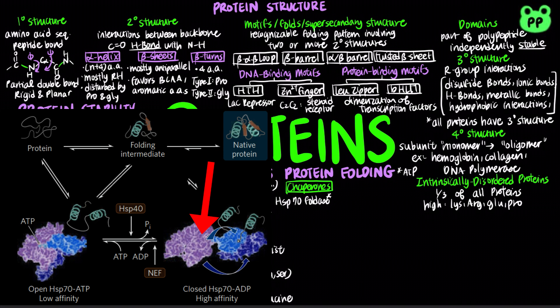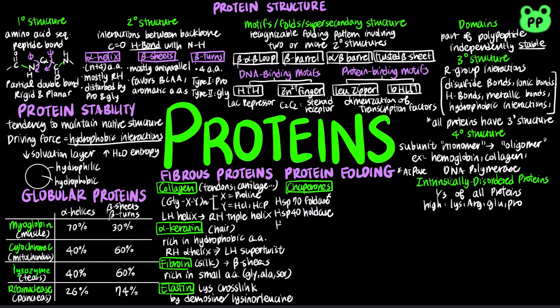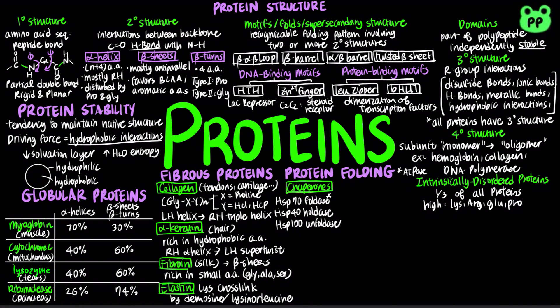Hsp70 requires ATP. Heat shock protein 40 is a holdase that does not require ATP and assists heat shock protein 70 in folding a polypeptide chain to form a tertiary structure. Proteins can also be unfolded by heat shock protein 100, which requires an ATP molecule.